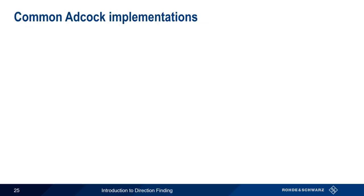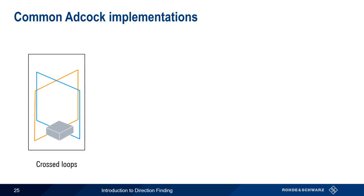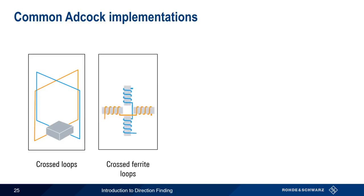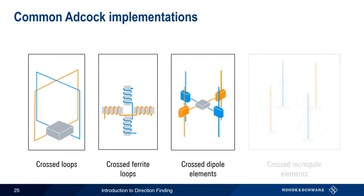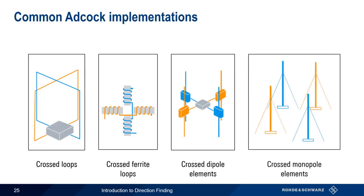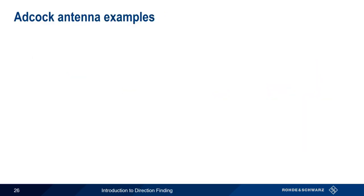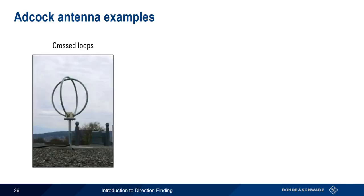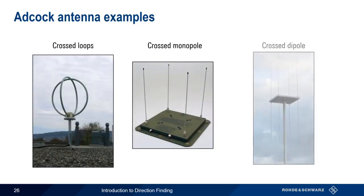In addition to crossed loops, there are a number of different ways to create ADCOCK antennas that yield the desired pair of figure-eight patterns. These include things like crossed ferrite loops, where the loops are wound around conductors, as well as crossed dipole elements and crossed monopole elements — the latter being more appropriate when we have a ground plane, and the former better suited for pole or tower-mounted applications. Examples of these include crossed loops, a crossed monopole, and a crossed dipole. It is also important to note that one could quite easily confuse some of these antennas with typical Doppler-DF antennas, based on the number and arrangement of elements.